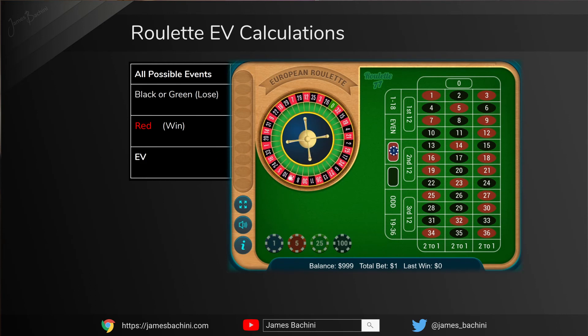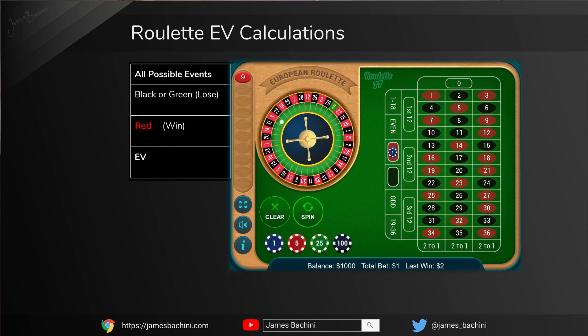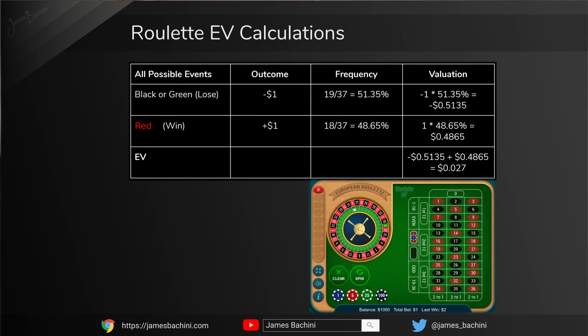Let's look at a quick example using a roulette wheel. A European roulette wheel has 37 numbers: 18 red, 18 black, and one green zero. If we bet on red or black we have an 18 in 37 chance of that outcome happening — just below 50%, at 48.65%. The odds are paid out one to one, so the opposite is also true: we have a 51.35% chance of losing our stake. We calculate the EV as minus 0.5135 plus positive 0.4865, giving an EV of minus 0.027. This means that for every dollar we bet on roulette we're losing 2.7 cents every spin — the house edge is 2.7%.